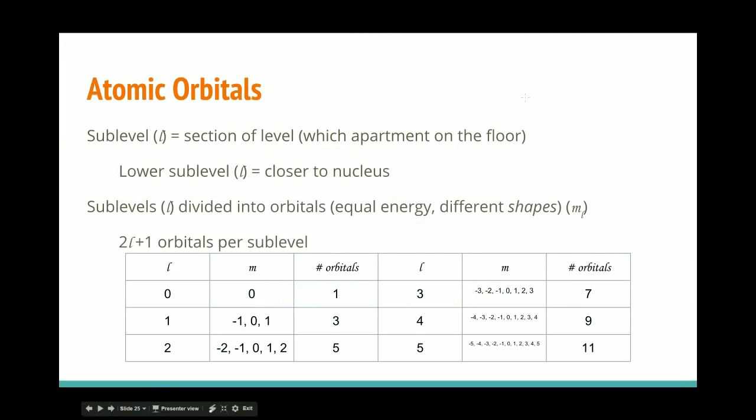And because M sub L, the orbital, the angular momentum, the magnetic, whatever, it can have a certain number of values, you know, 0, negative 1, 0, 1, negative 2, negative 1, 0, 1, 2. That means that there are two L plus one orbitals in each sublevel. So all that means is 1, then 3, then 5, then 7, then 9, then 11. It's just the odd numbers.